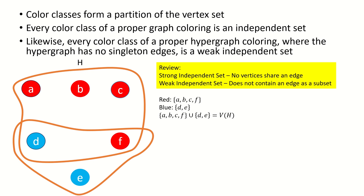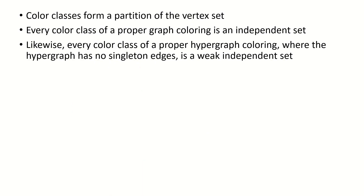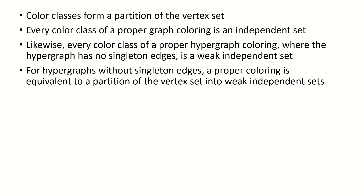We can see this in the following hypergraph. Together with the fact that color classes form a partition of the vertex set, we can now say that a proper hypergraph coloring is a partition of the vertex set into weak independent sets, provided the hypergraph does not have edges of size 1.